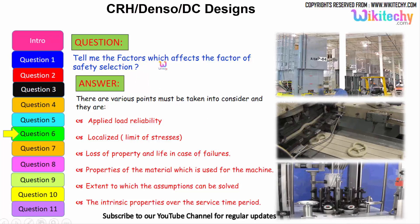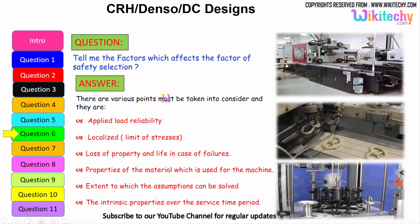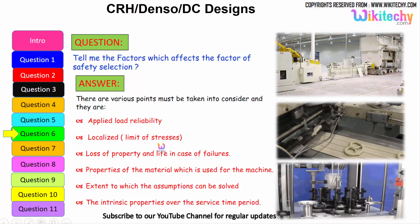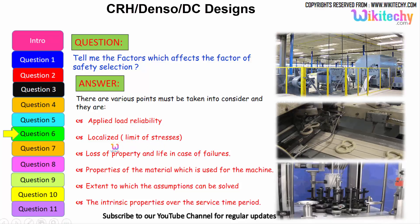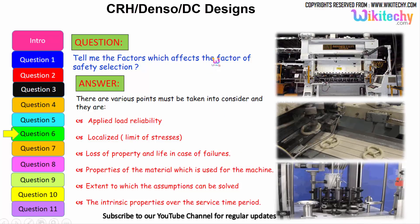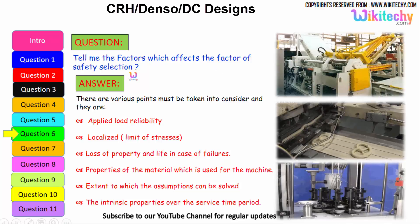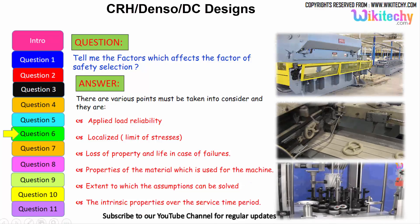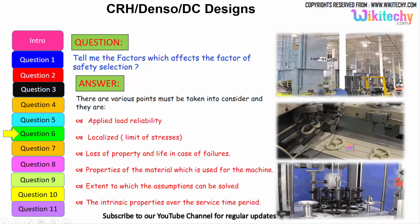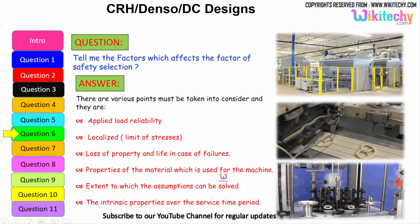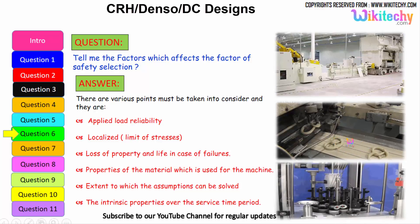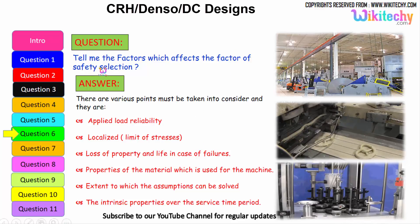Factors which affect the factor of safety selection: applied load reliability; limit of stress as localized; loss of property and life in case of failures; properties of the material used for the machine; the extent to which the assumptions can be solved — how much it will extend, compress, or similar; and the intrinsic property over the service time period — how it will sustain everything is needed for factor of safety selection.